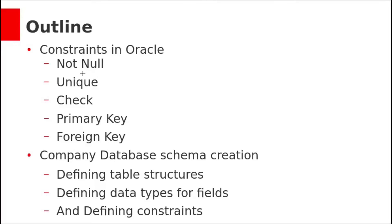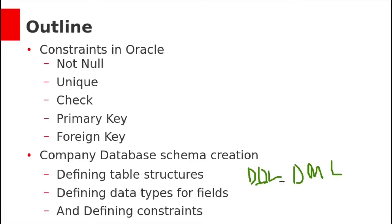We have seen how to use all constraints — non-null, check, unique, primary key, and foreign key — in Oracle. Now we can create the company database schema. We have already seen DDL and DML commands, and just now we have seen how to use all these constraints in Oracle. Let us design the company database schema.